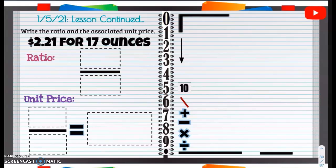January 5th, 2021. Lesson continued. Write the ratio and the associated unit price.